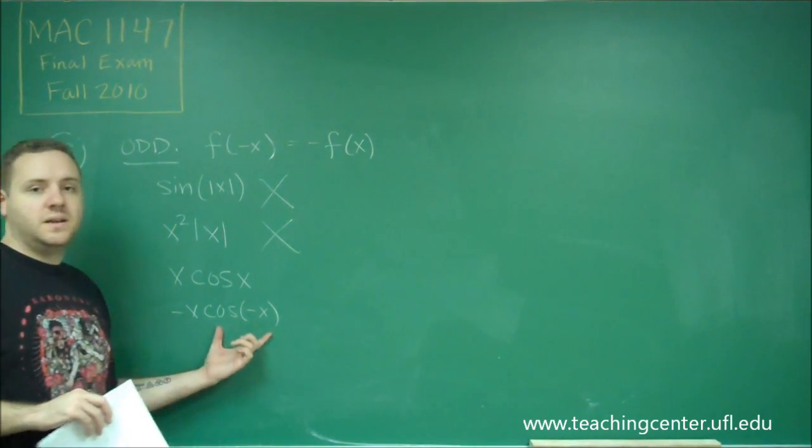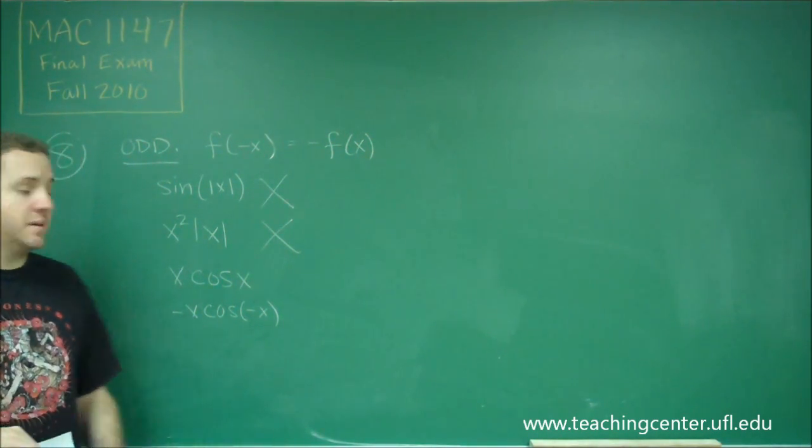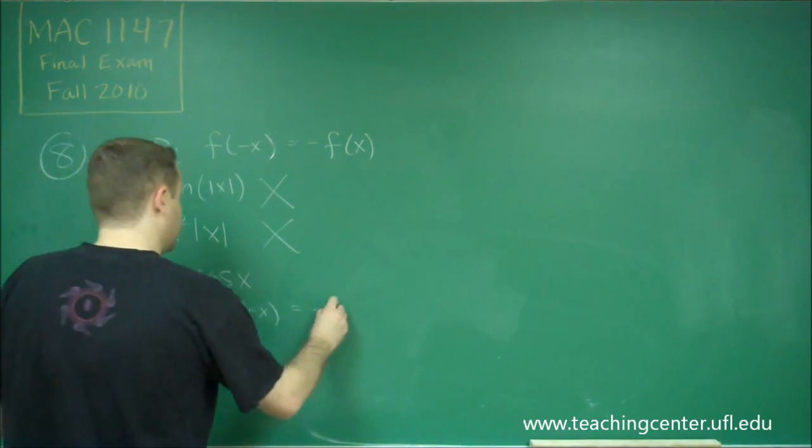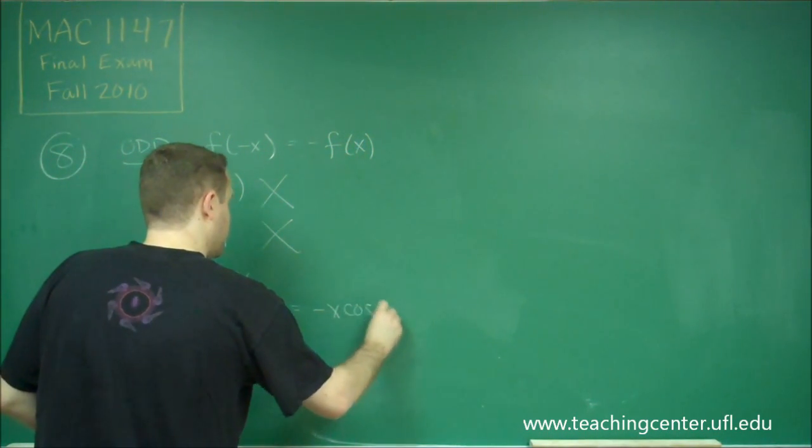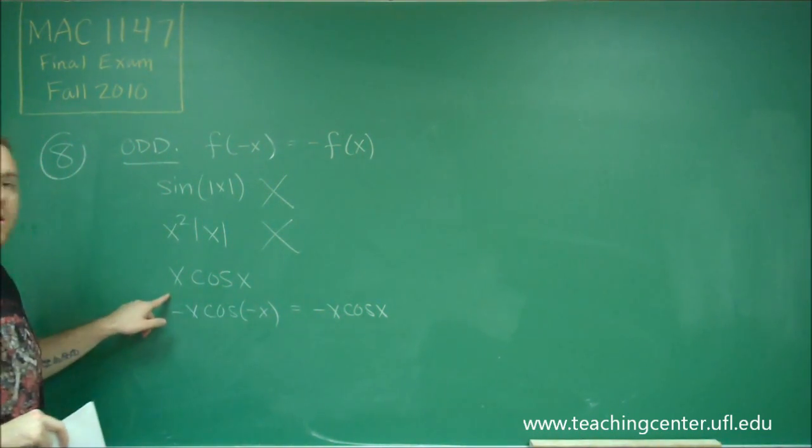But remember that cosine is an even function, so cosine of minus x is the same thing as cosine of x. So, this is equal to minus x cosine of x, in other words, the exact opposite of what we started with.